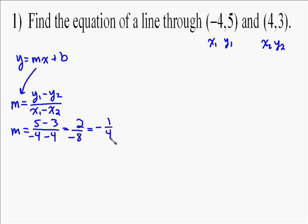So that's our slope. So now we start our process, and the process of finding this equation is, insert your slope. So we do that first, y equals negative 1 fourth x plus b.